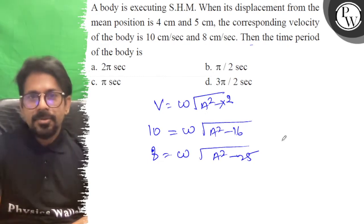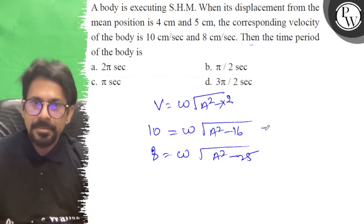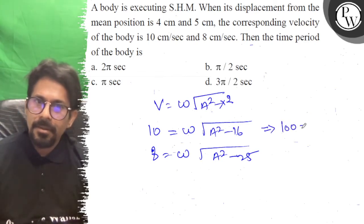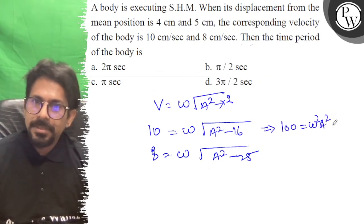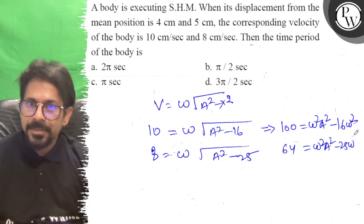To find the time period, we need omega. So we'll square both equations. 100 equals omega squared A squared minus 16 omega squared, and 64 equals omega squared A squared minus 25 omega squared.